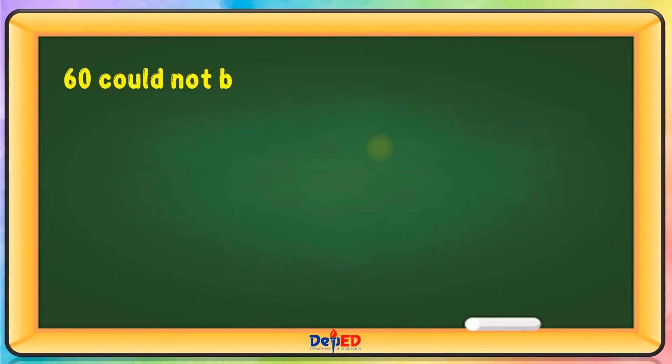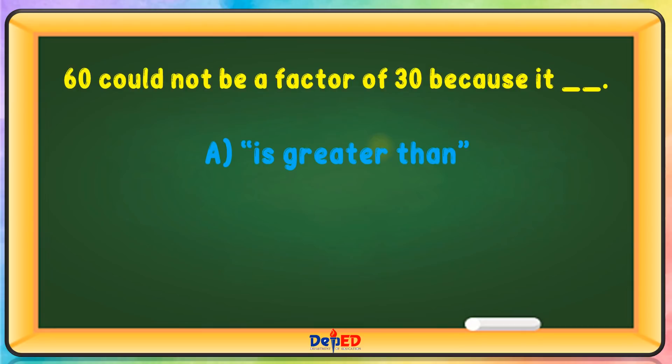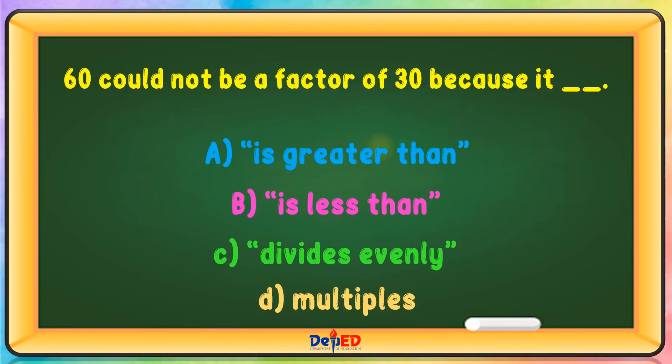60 could not be a factor of 30 because it: A. Is greater than. B. Is less than. C. Divides evenly. Or D. Multiples. The correct answer is A.